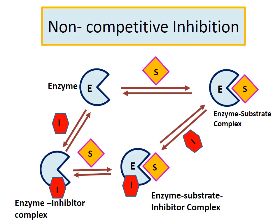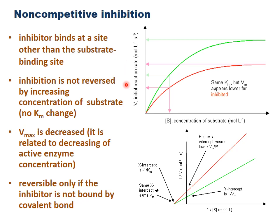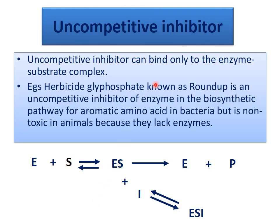In the non-competitive inhibition graph, the red curve is the inhibited graph and green is non-inhibited. The inhibition is not reversed by increasing the concentration of substrate — substrate concentration does not change the outcome. Instead, Vmax is reduced: in the non-inhibited case Vmax is higher, but with inhibition Vmax decreases. This reflects a decrease in active enzyme. The inhibition is reversible only if the inhibitor is not bound by a covalent bond.